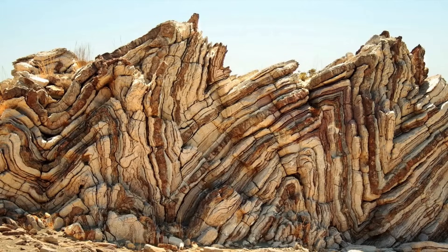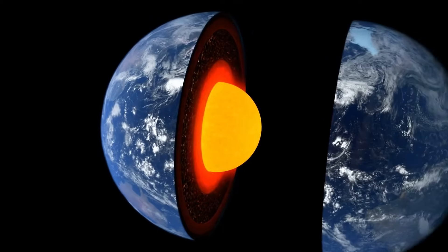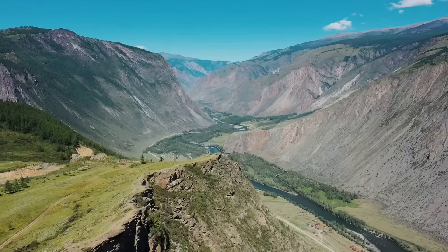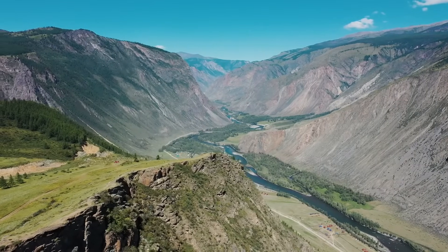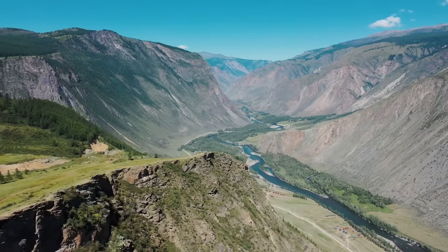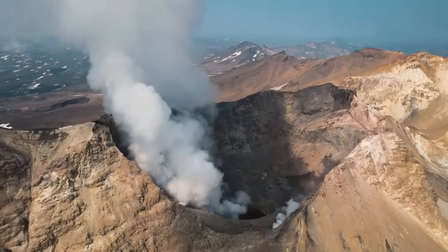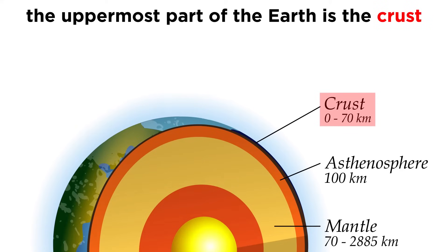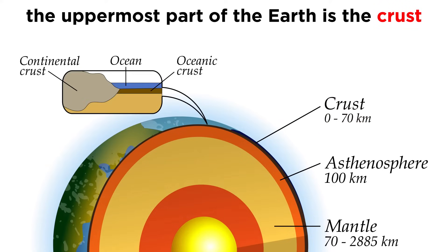Now that we've discussed the stresses that affect Earth's rocks, let's go into detail about the different layers of Earth. On the surface, Earth may seem like a relatively stable place, with the occasional earthquake or volcanic eruption, but our experiences are limited to the uppermost part of Earth, the crust. Earth's crust comes in two varieties: continental and oceanic.